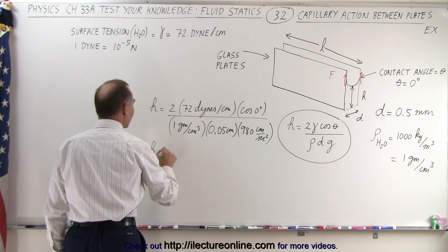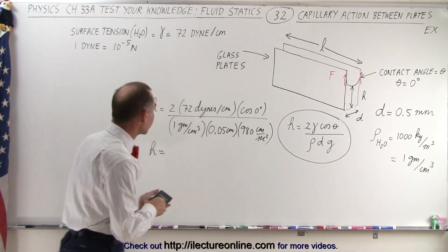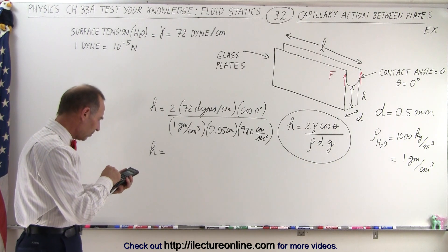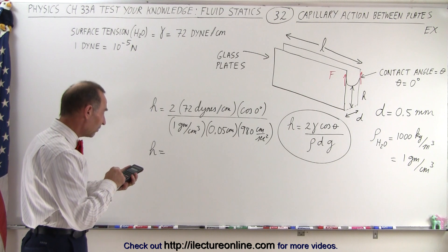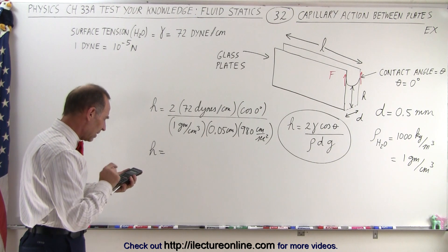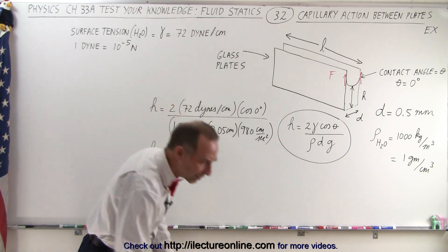So now we have the height is equal to, and the answer is going to be in centimeters. So I have 2 times 72 times 1 divided by 0.05 and divided by 980, which gives us a height of 2.9 centimeters.